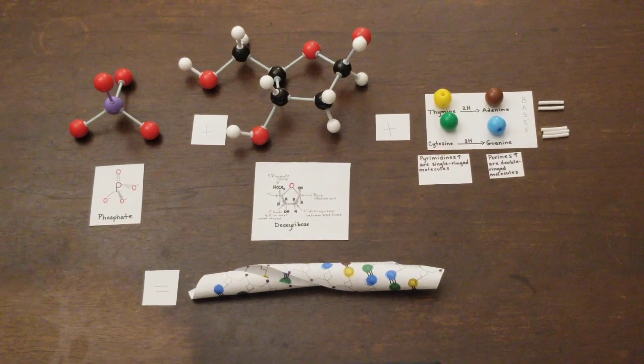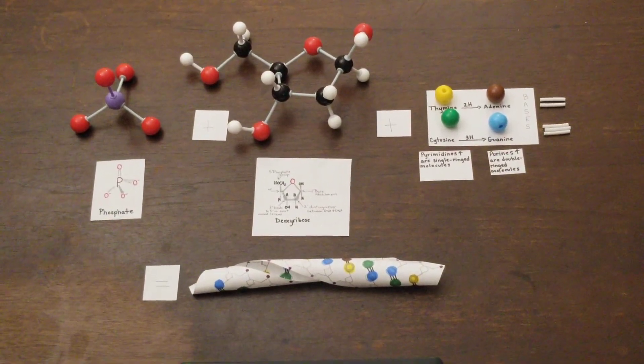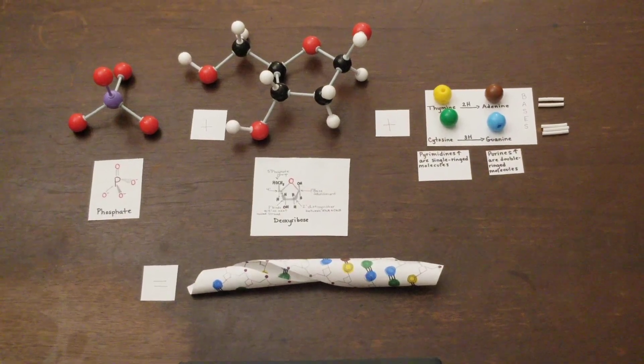The grooves in DNA go up and to the right in a Watson and Crick model, making them right-handed. Most DNA is right-handed in B form.